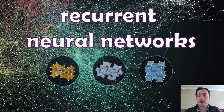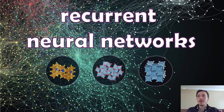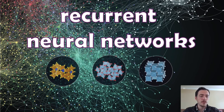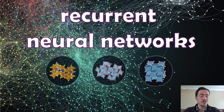Hey everybody, welcome back to our materials informatics series. In our last video we talked about convolutional neural networks and they are amazing. They're amazing because they allowed us to do feature-free engineering — we didn't have to worry about designing these features. It found them automatically through the use of kernels convolved over our image to create filters, those filters can be pooled, and we end up with this awesome ability to find features on its own.